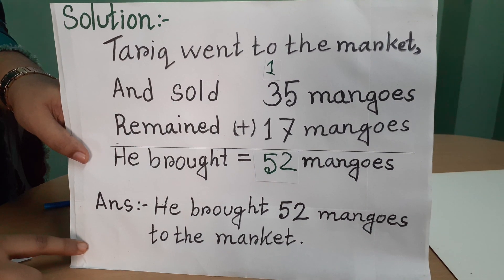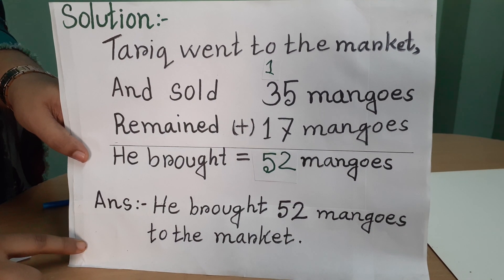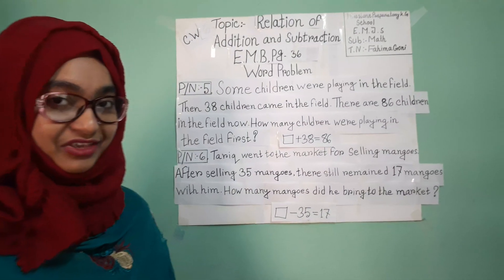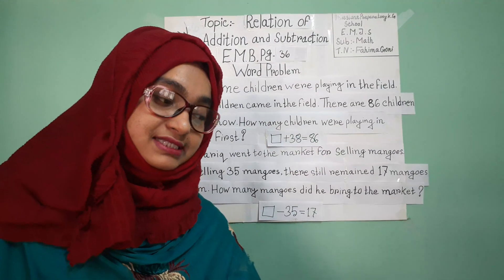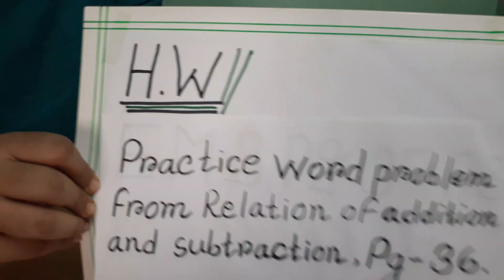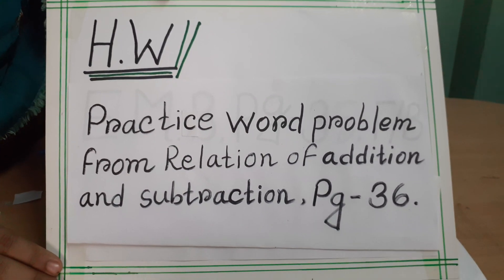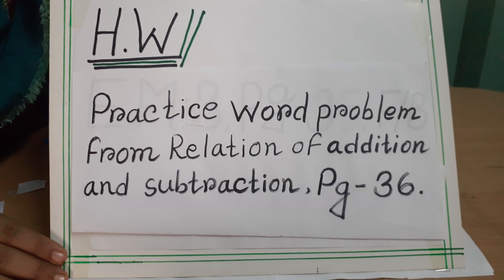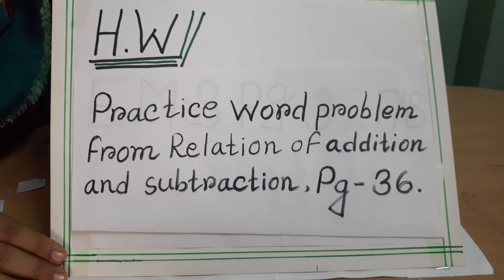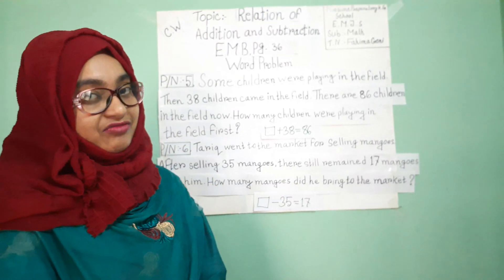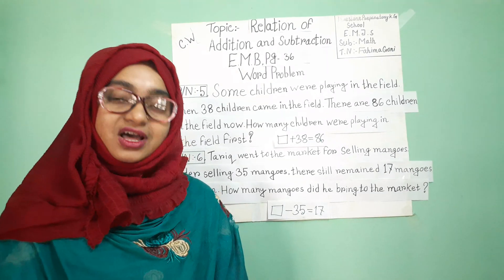Students, see this and write it in your CW copy. Now it is time to give you homework. I hope all of you have understood how we have done the solution. Your homework is: practice word problems from relation of addition and subtraction, page number 36. I hope all of you have understood the two word problems we did today.